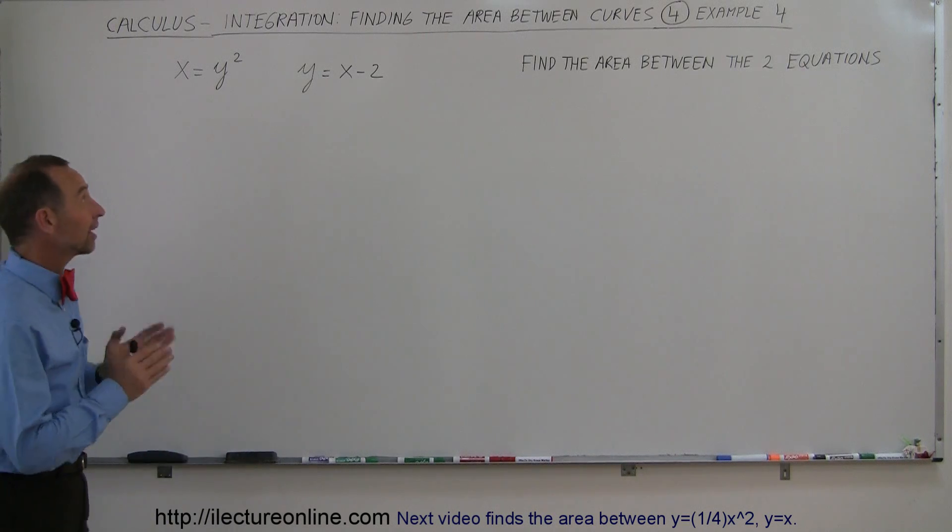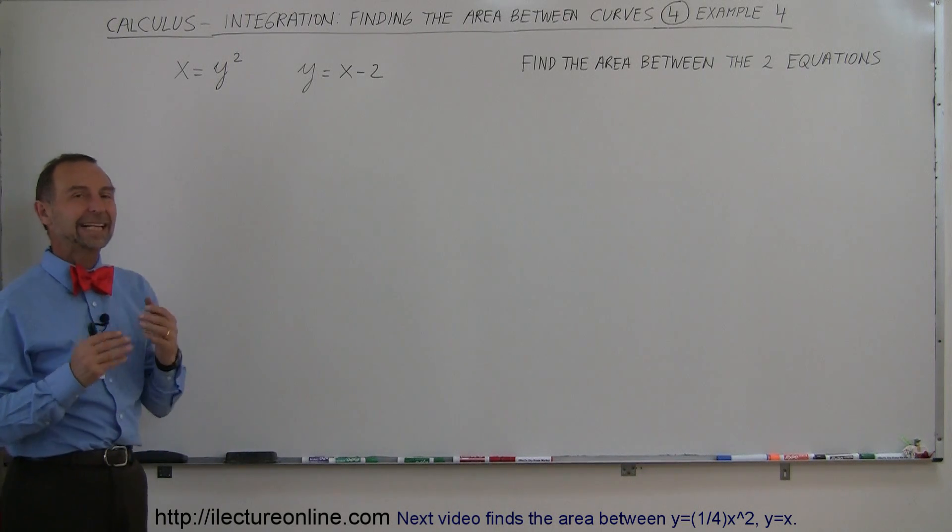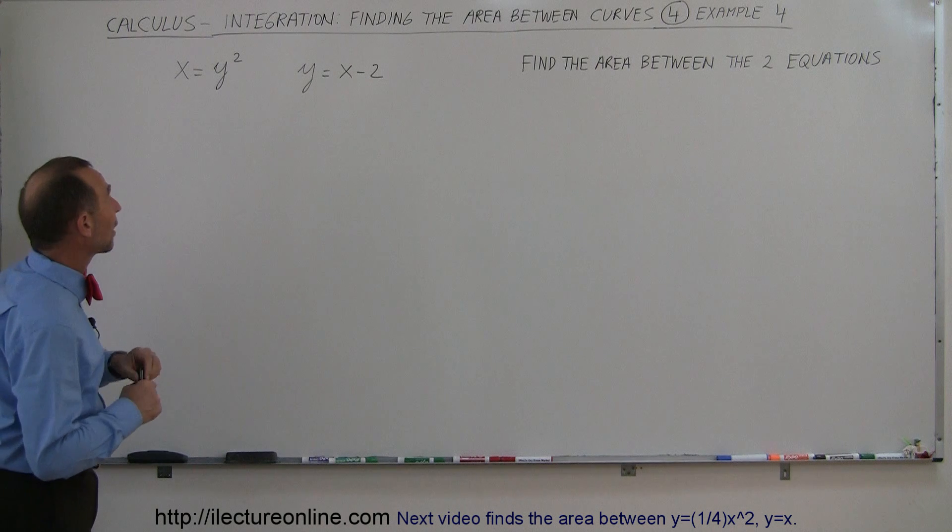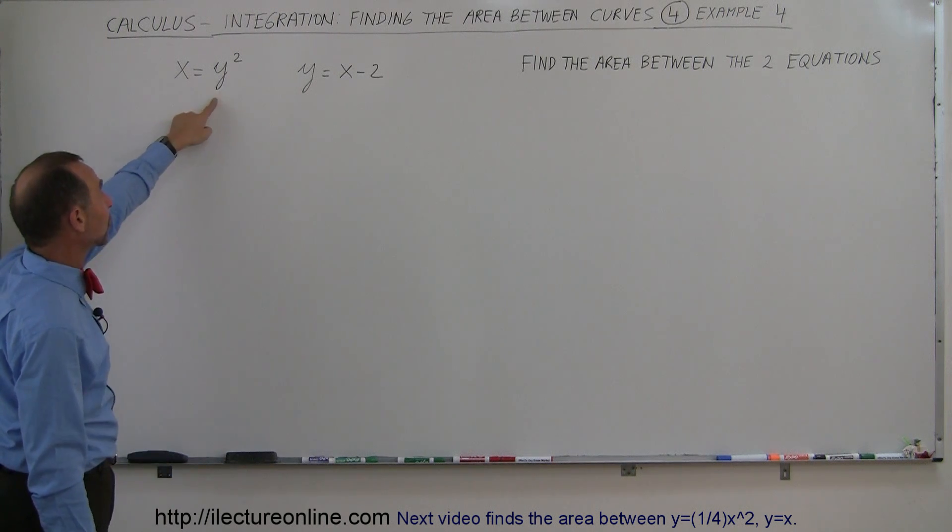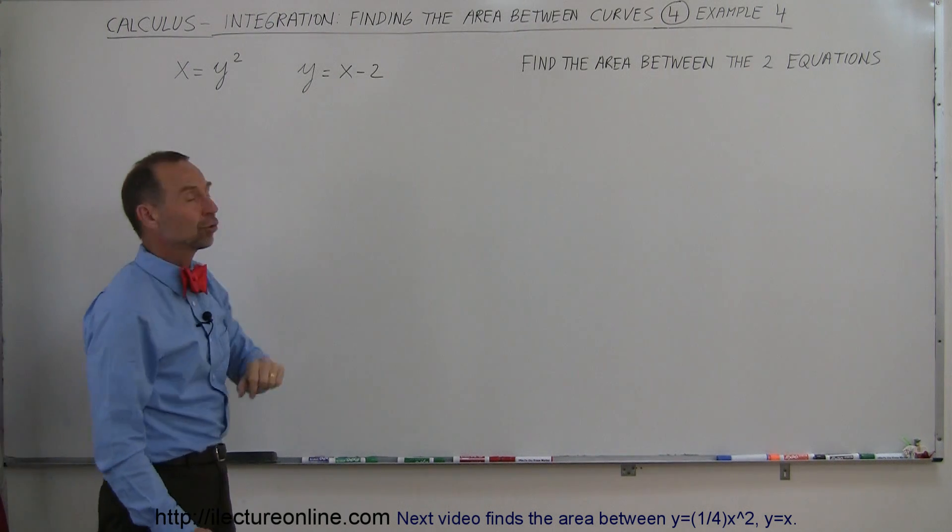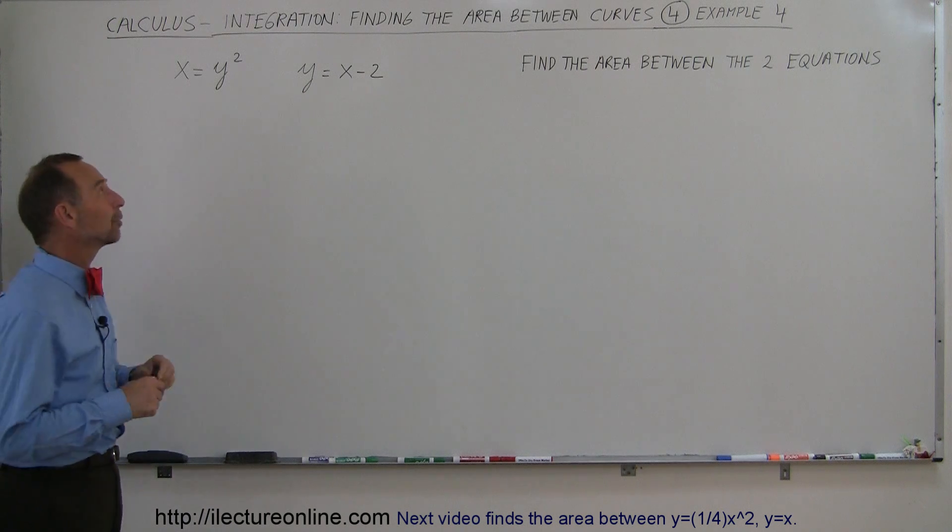Welcome to iLecture Online, and in our next example we see something slightly different. Let me show you why. We have two equations, one is x equals y squared, the other one is y equals x minus 2. So let's find the area bounded by those two equations.